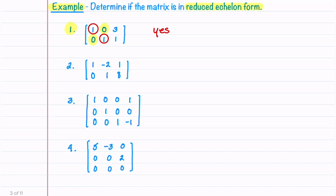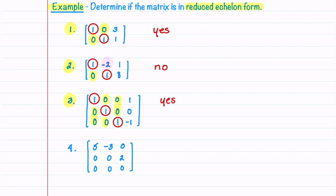I'd suggest you stop the video and see if you can determine if the other three matrices are in reduced echelon form. Let's look at our second example — no rows of zero, so we begin by circling the leading entries. We have zeros below the leading entries; however, we don't have a zero above this leading entry, so our matrix is not in reduced echelon form. Let's go to number three — no rows of zero, so we'll circle our leading entries. We have zeros below the leading entries and zeros above the leading entries, and our leading entries are equal to one, so this matrix is in reduced echelon form.